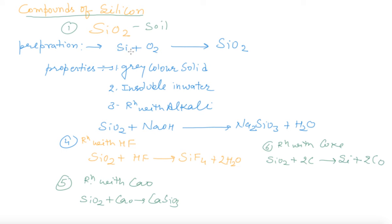Preparation: silicon reacts with oxygen and will give you silicon dioxide. Normal method preparation. Properties: it is gray color solid, insoluble in water.